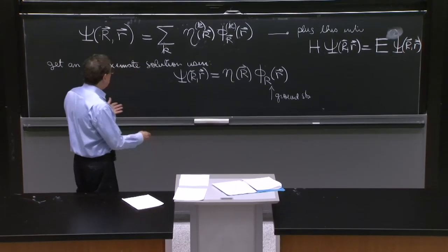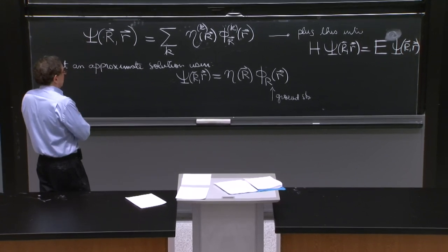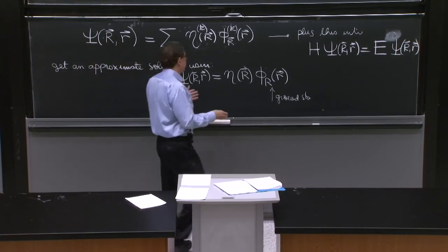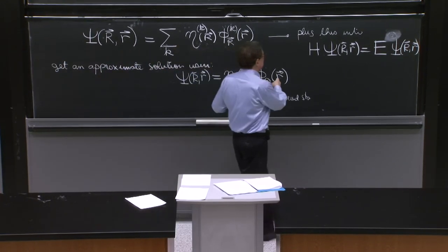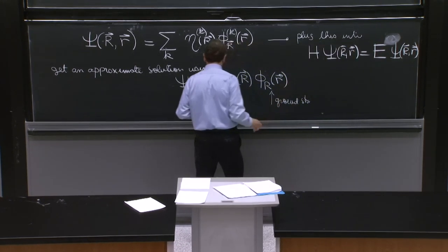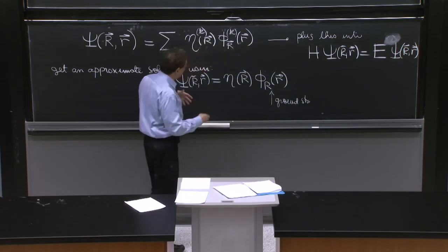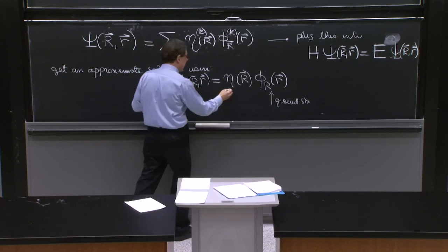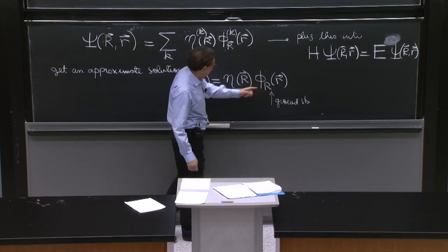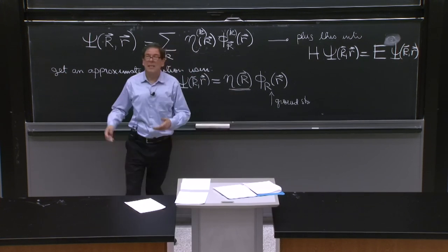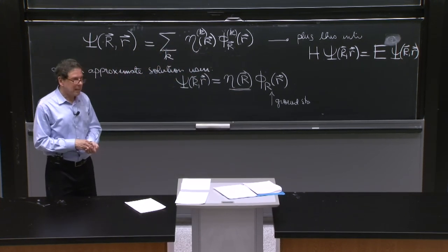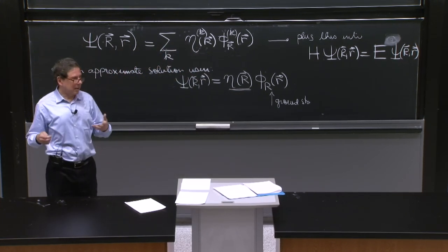So if you're giving up the exact Schrödinger equation and taking just one term in the expansion, the question becomes: how do we determine the eta? That is our question.